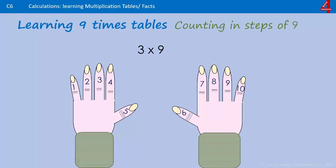Starting with three times nine, we're timesing nine by three, so we put down the third finger. On the left side of the finger you've put down will be the number of tens you have, and on the right side of the finger you've put down will be the number of ones you have.